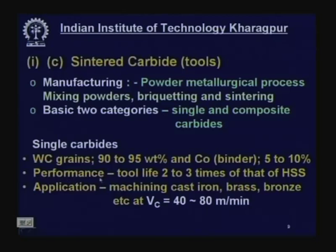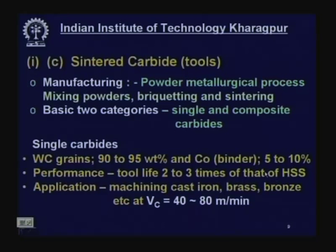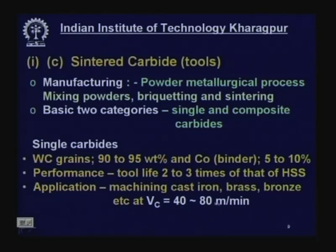Tool life became 2–3 times that of high speed steel, enhancing productivity by more than 250% in machining steels. Applications are wide: machining cast iron, brass, bronze, etc. at velocities of 40 to 80 meters per minute.